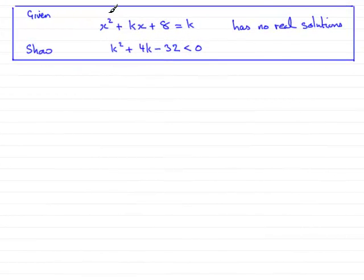Now this part of the question, we're given this equation: x squared plus kx plus 8 equals k, and we're told that it has no real solutions for x. And we've got to show that k squared plus 4k minus 32 is less than 0.